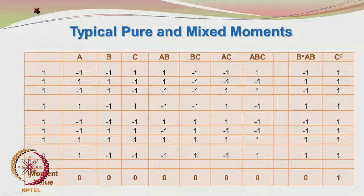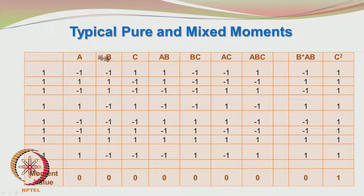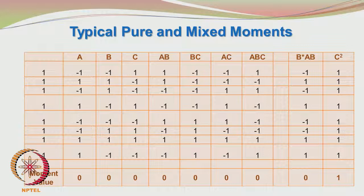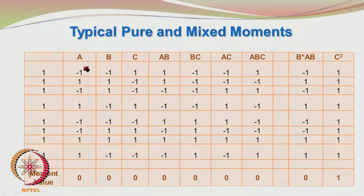Let us now look at a saturated 2³ factorial design X matrix. In addition to the intercept, we also find AB, AC, BC, and ABC — that would be 1 plus 7, giving 8. So all 8 settings are being used up to determine 8 parameters. When you look at the A column, you are having minus 1 and plus 1; it is an orthogonal design and so the number of minus 1 would be equal to the number of plus 1, and so the total will be equal to 0.